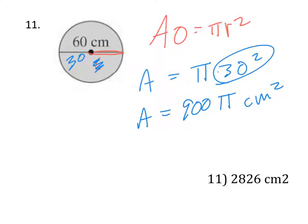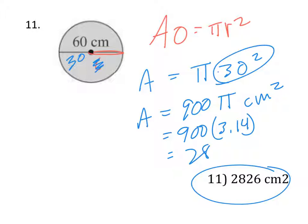So if I say, don't leave in terms of pi, kind of like this answer, you'll multiply 3.14 times that, so 900 times 3.14, and that's how you're going to get 2826 centimeters squared.